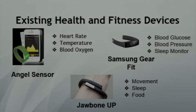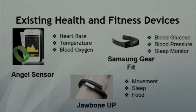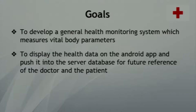Here are some currently available health and fitness devices. The first is the Angel sensor, which monitors heart rate, temperature, and blood oxygen. The next is the Samsung Gear Fit, which monitors blood glucose, blood pressure, and sleep. And the third is the Jawbone Up, which measures movement, sleep, and food. The goal of our project was to develop a health monitoring system that measures certain vital body parameters, displays this health data on an Android app, and stores it in a server database for future reference by the doctor and the patient.